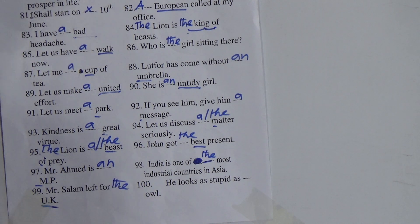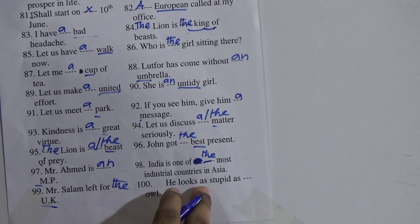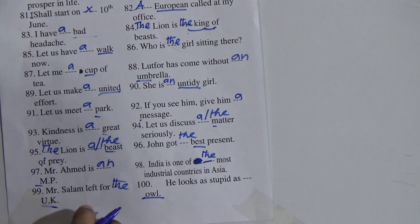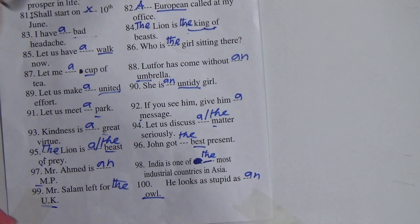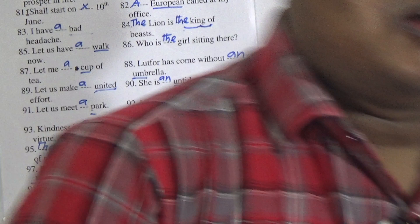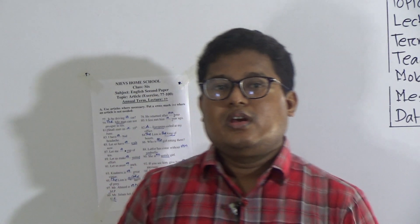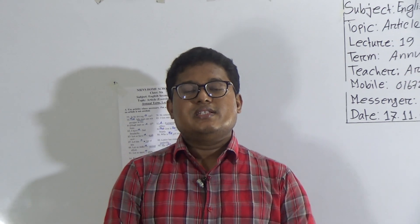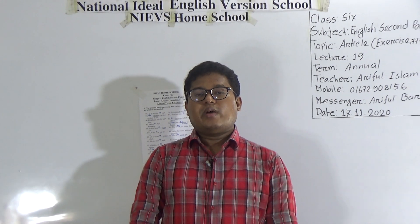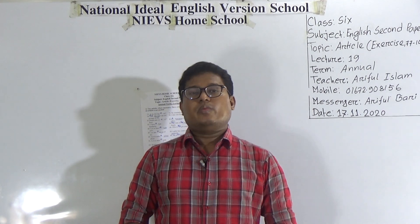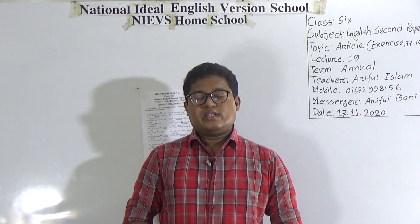99: 'Mr. Salam left for ___ UK.' 'UK' is definite and emphasized, so we put 'the': 'Mr. Salam left for the UK.' 100: 'He looks as stupid as ___ owl.' The word 'owl' starts with 'o', which is a vowel, so we put 'an': 'He looks as stupid as an owl.' That's all for today, my dear students. Thanks for watching this class and keep practicing at home. Stay safe, stay well. See you again. Assalamu Alaikum.